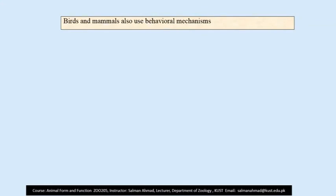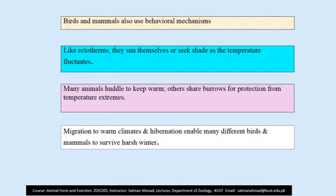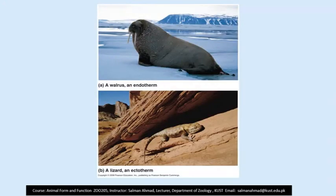Birds and mammals also use behavioral mechanisms to maintain a constant body temperature. Though they are endotherms, just like ectotherms they sun themselves during cold days or seek shade as temperature fluctuates during sunny days. Many animals huddle to keep warm, and others share burrows for protection from temperature extremes. The phenomena of migration to warm climates and hibernation enable many birds and mammals to survive harsh environmental temperatures. A walrus, an endotherm and aquatic mammal, and a lizard, an ectotherm on a rock, can be observed on screen as examples.